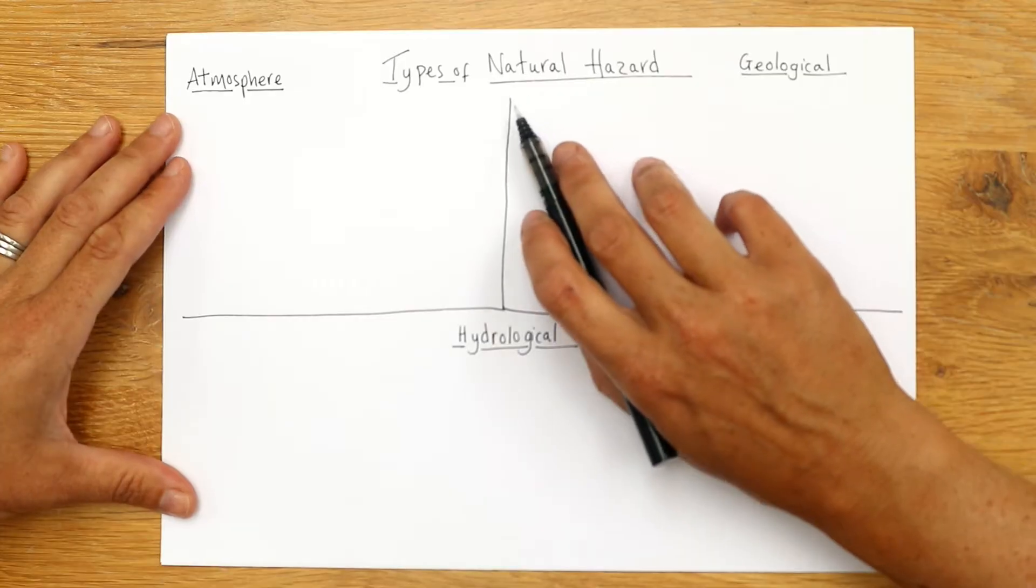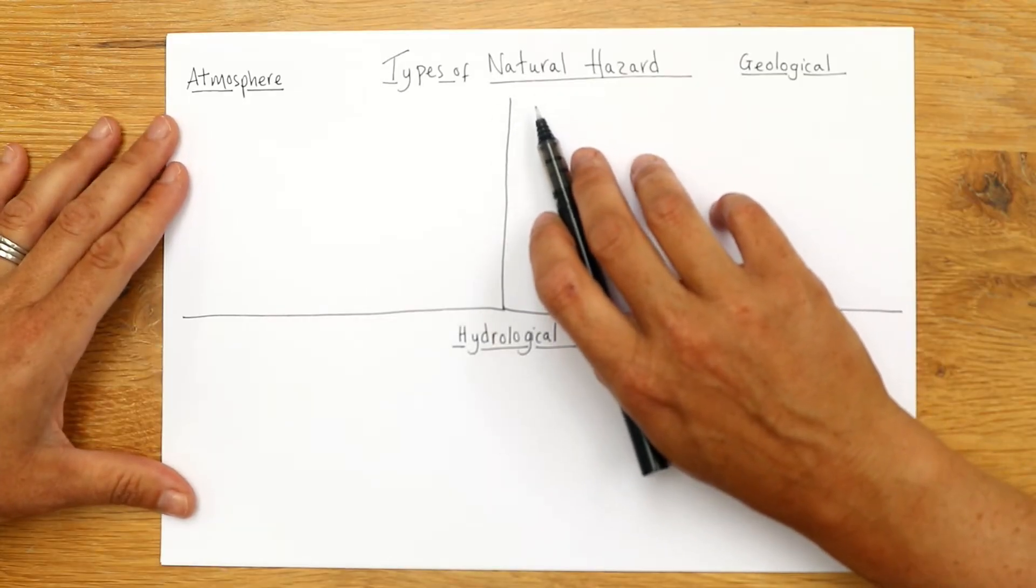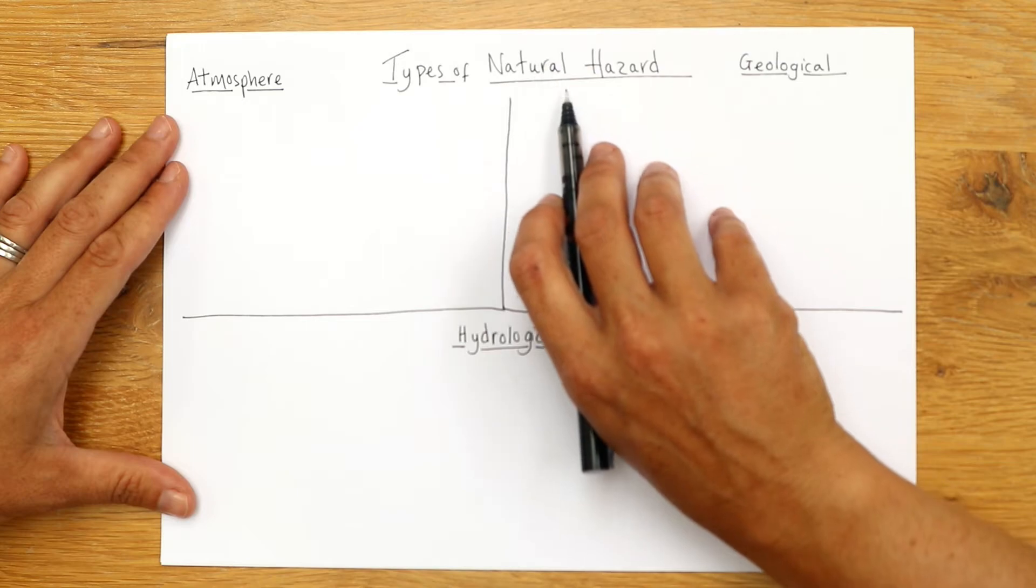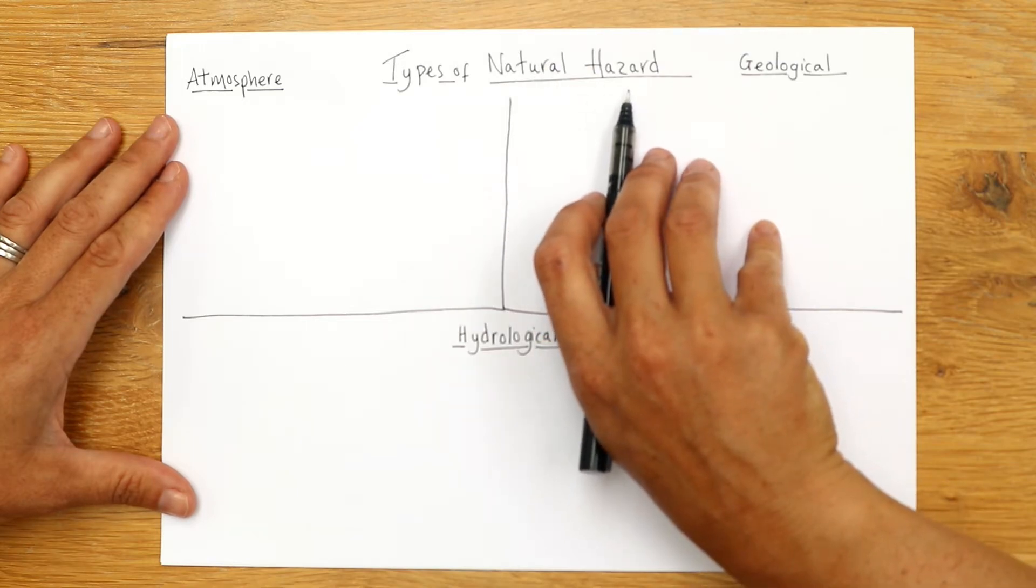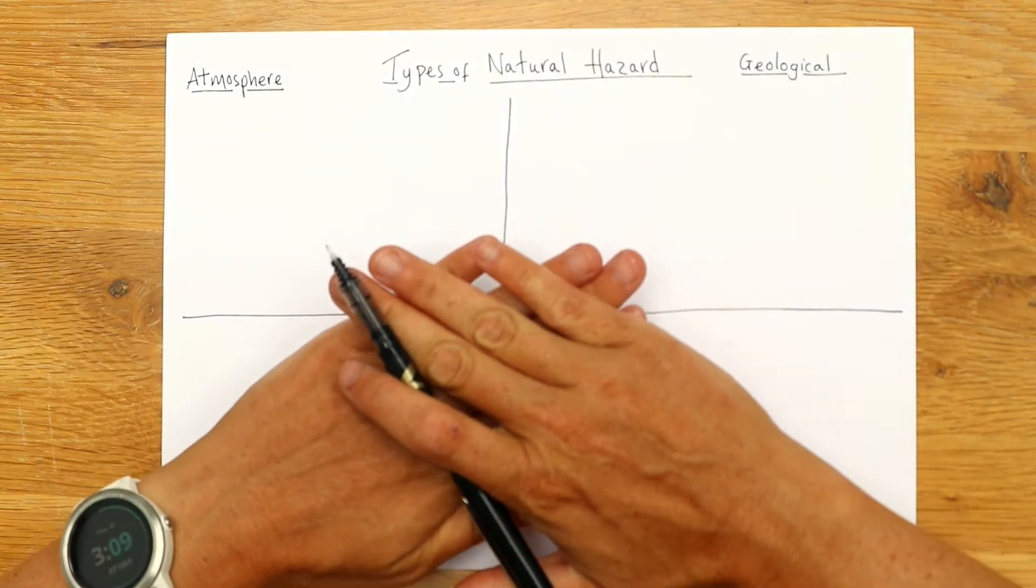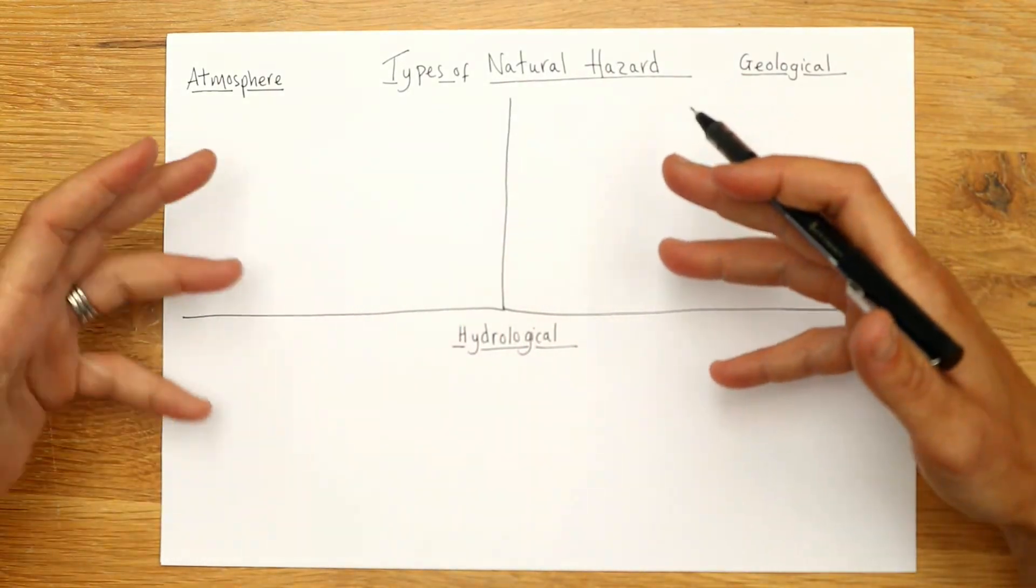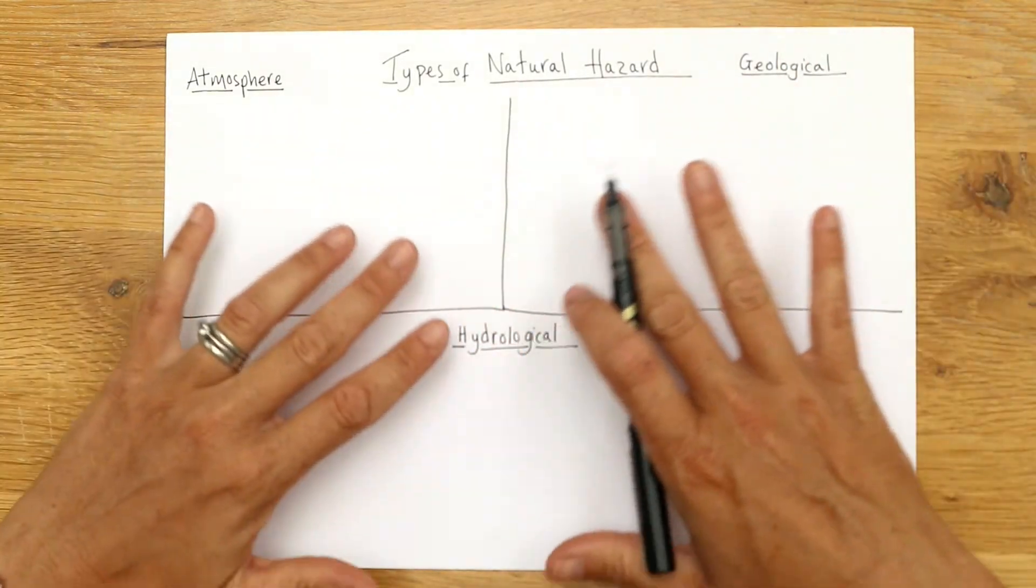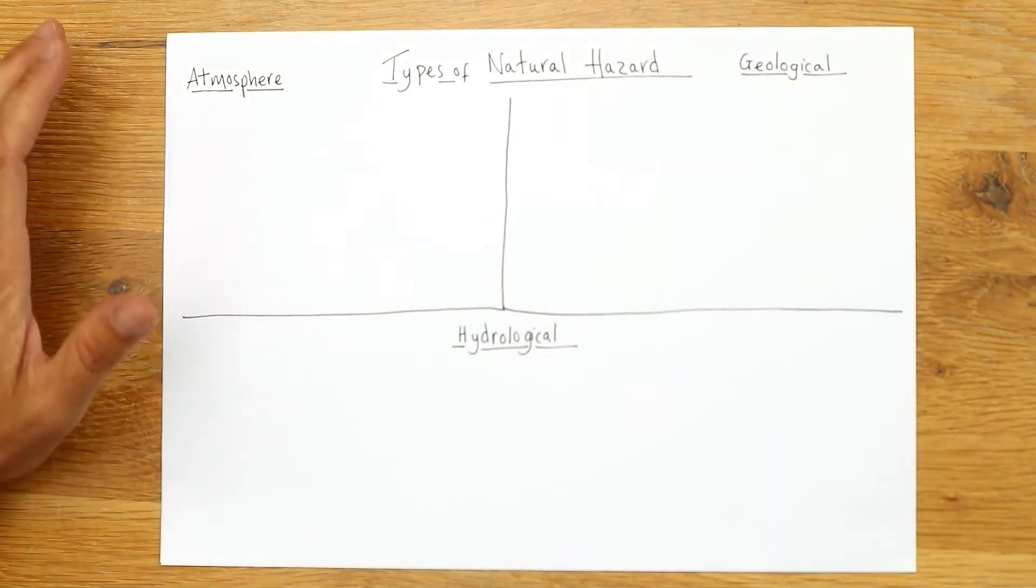Now remember, these things that happen, they're all natural, natural events, and they only become a hazard when people and the natural hazard combine. So if they were just happening on their own, there's no people around, they wouldn't be a hazard. It's just because there's people there.